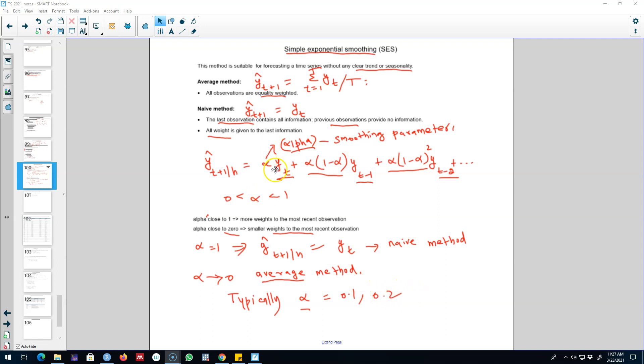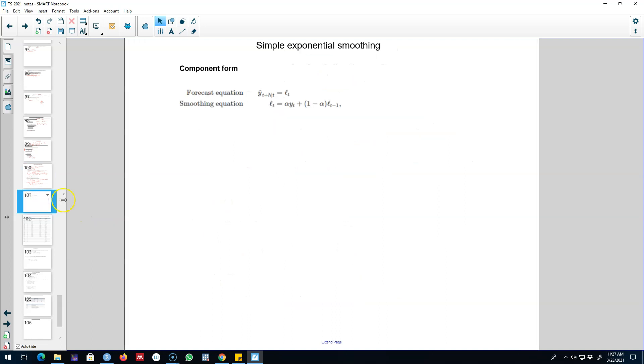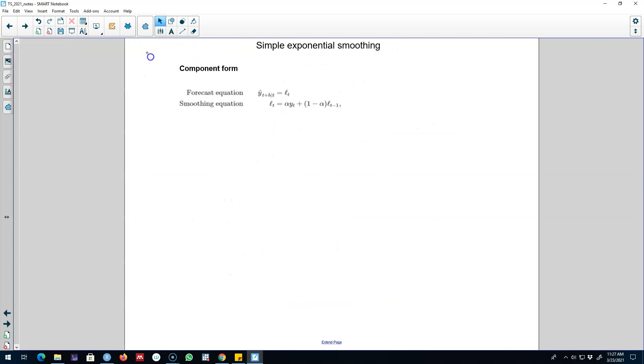Since the assignments of these weights depend on the value of alpha, we need to estimate the value of alpha. In this video I'm going to talk about how to estimate the value of this smoothing parameter, and the value of this smoothing parameter can be estimated using what we call a component form.